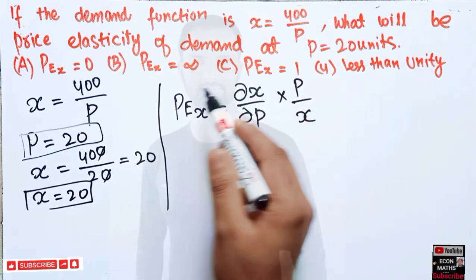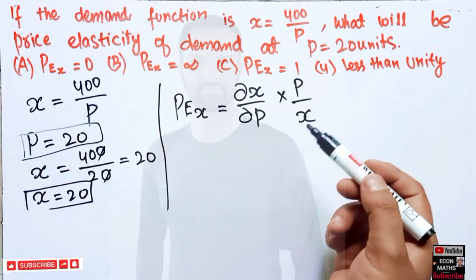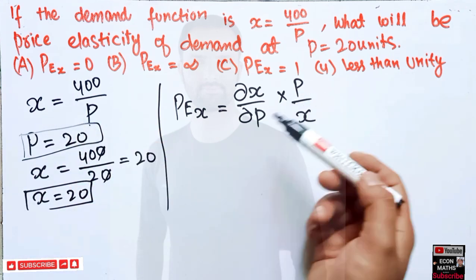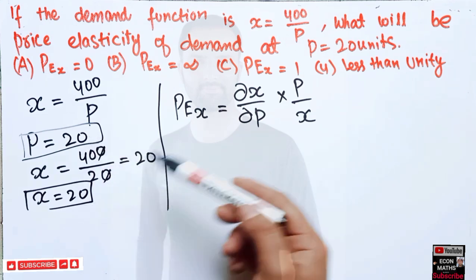That means we just need to take the derivative of this demand function, and after that, we just need to plug the value of p and x in this.